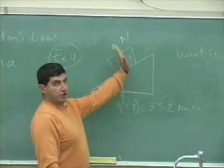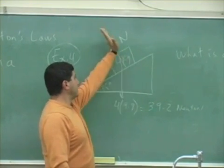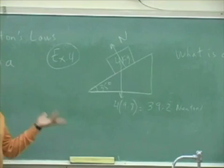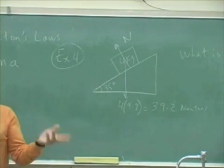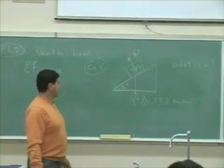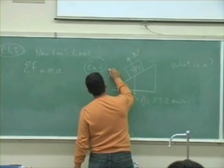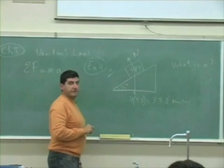So the normal force is pushing up at an angle like this, and then the weight is down. And the block is going to accelerate down the incline, right? Down the incline like this. So the acceleration of the block is this way. So the question is find A.